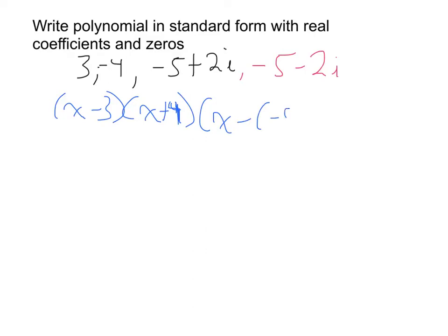So x minus negative 5 plus 2i, and x minus negative 5 minus 2i.